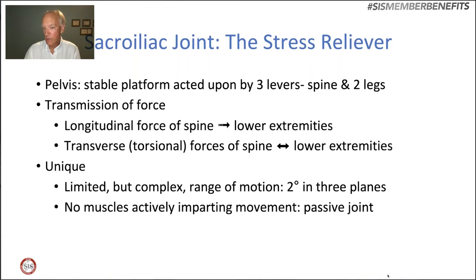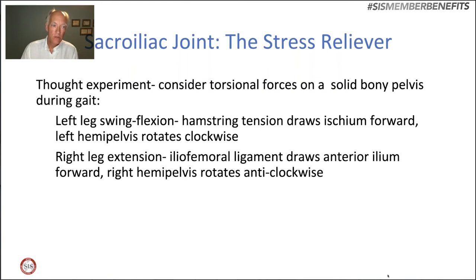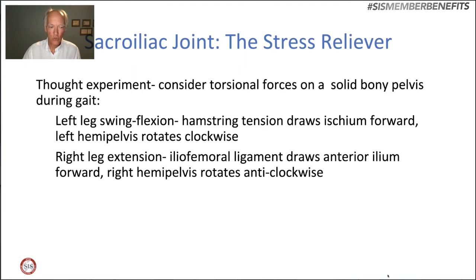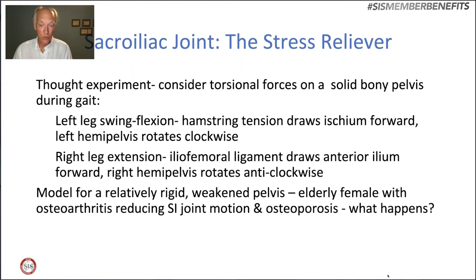Think of the pelvis as a platform acted on by three levers — the spine bearing load in compression, and two legs producing torsional forces. The sacroiliac joint is quite unique with about two degrees of motion in all three planes. There are no muscles which actively impart motion across the SI joint — it's purely a passive joint for stress relief. Consider the torsional forces on a rigid bony pelvis: as we walk and the left leg swings forward, that rotates the left hemipelvis up, while the right leg goes back, rotating the right hemipelvis posteriorly. The sacrum continually rocks back and forth, putting a tremendous amount of stress on a rigid structure.